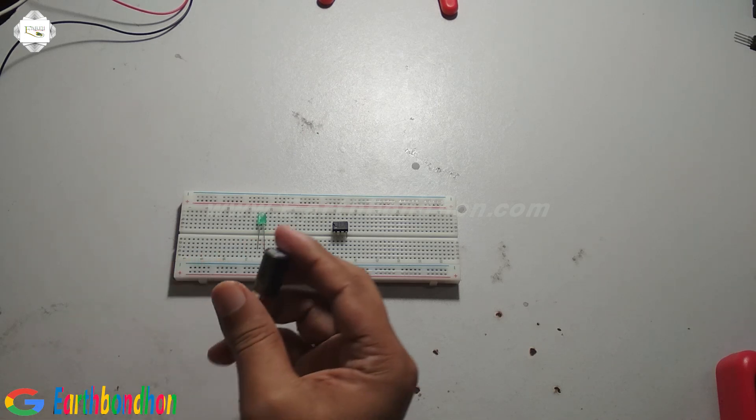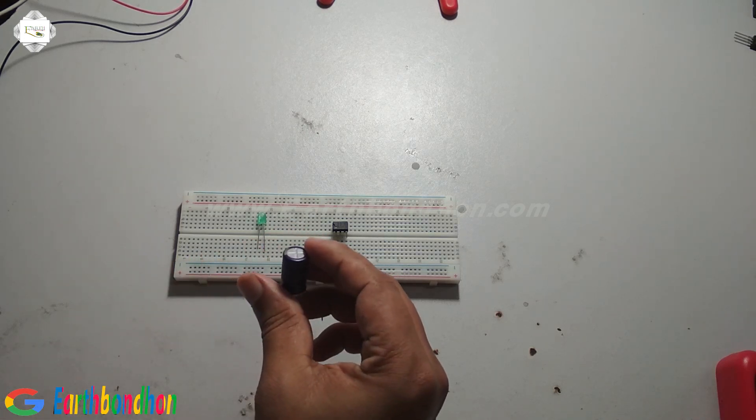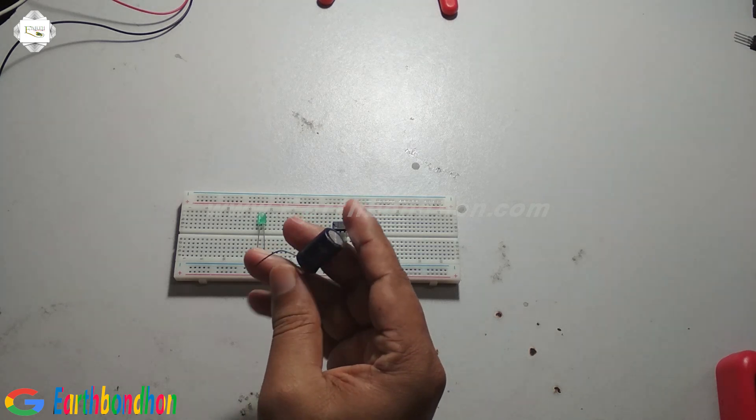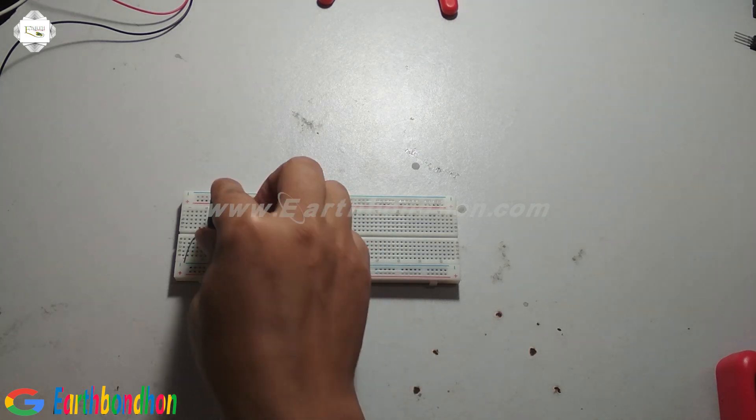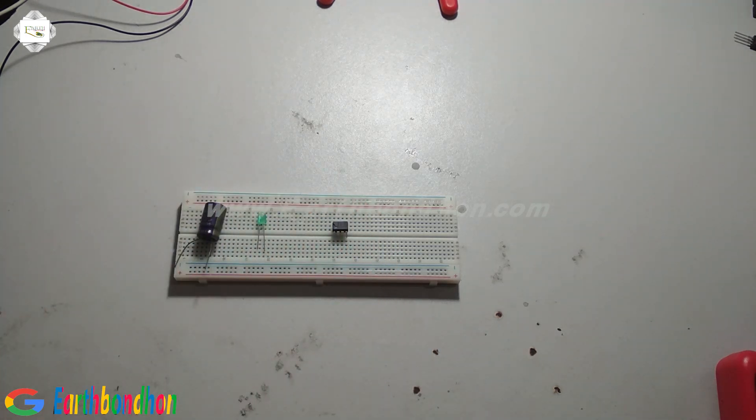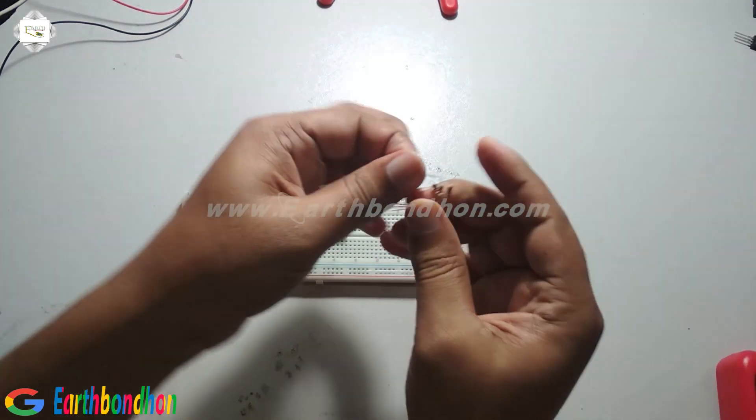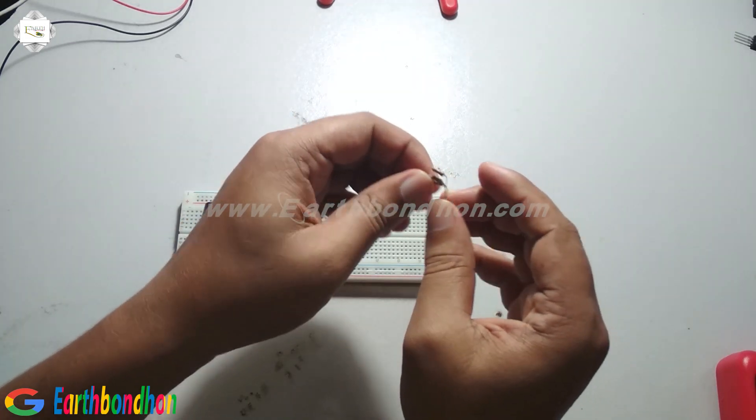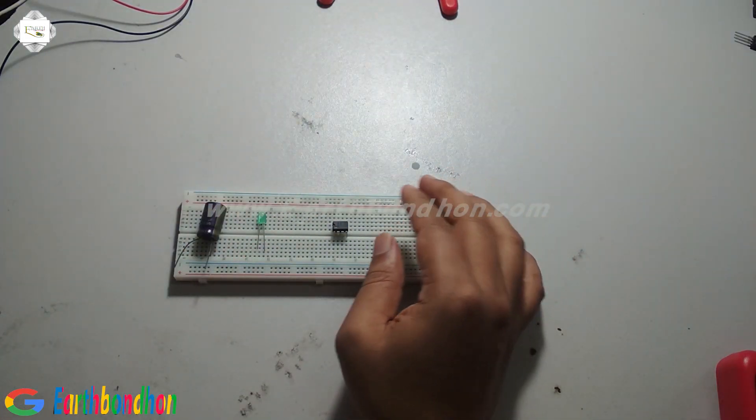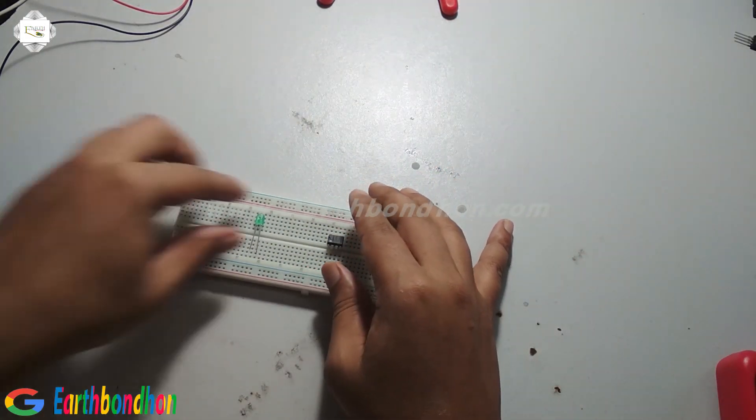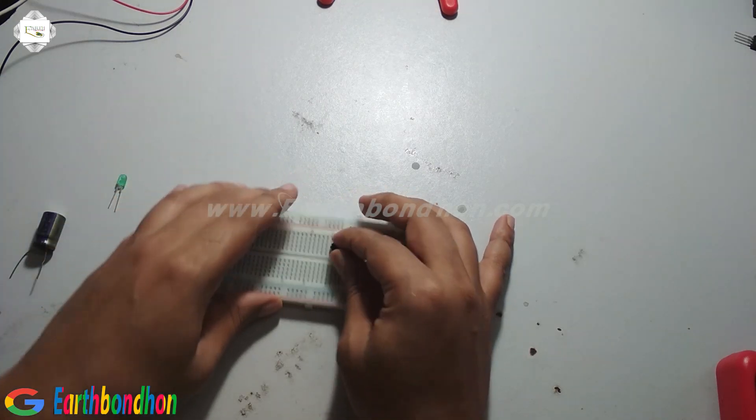The components needed are a 470 microfarad capacitor and three resistors, 1k ohm each. Now I'll set up the circuit.